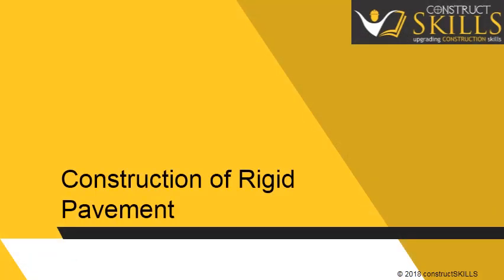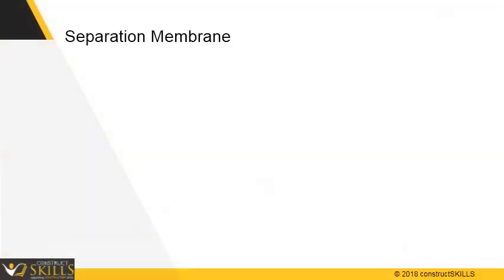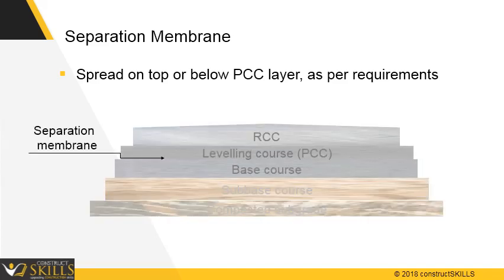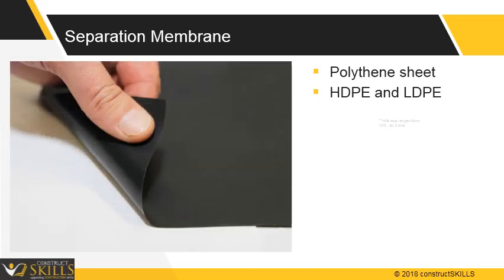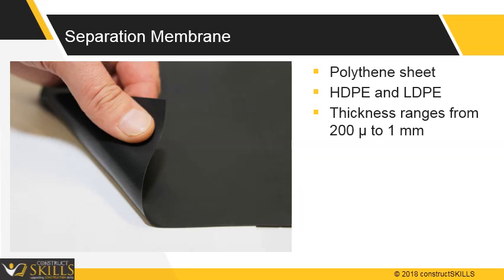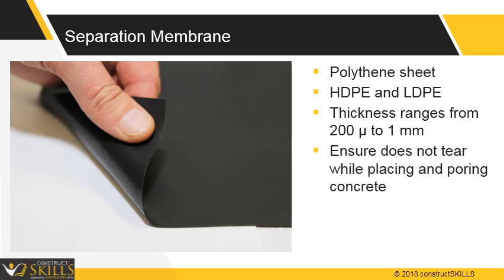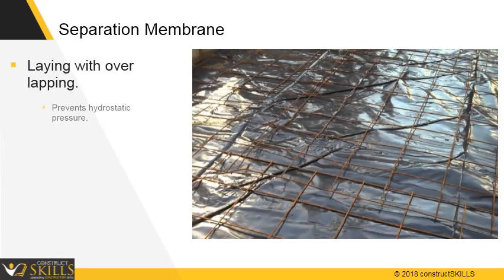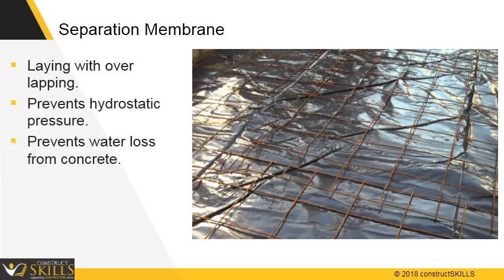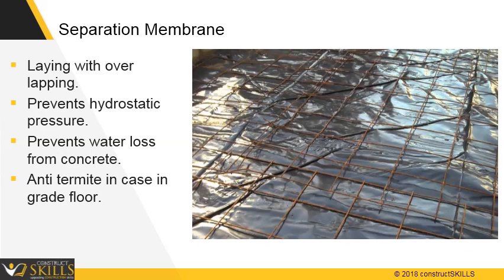The separation membrane is a plastic sheet spread over the top or bottom of the PCC layer. It is an HDP or LDP sheet, with thickness ranging from 200 micron to 1 mm, depending upon requirements. Ensure that it does not tear while placing and pouring the concrete. The laying shall be done with overlapping from the ends. It prevents hydrostatic pressure and water loss from concrete, and also helps with anti-termite protection in case of grade floor.